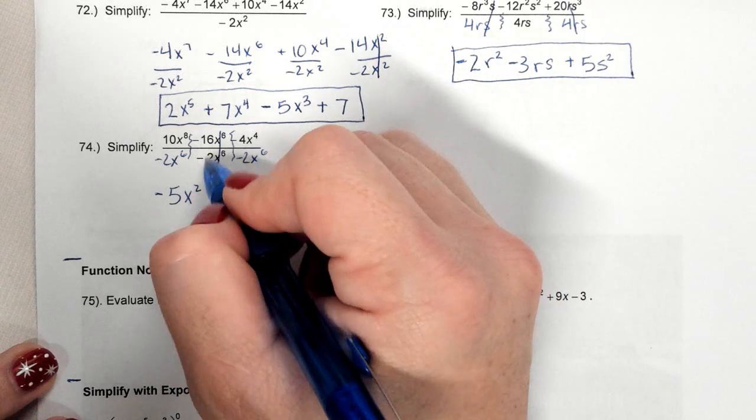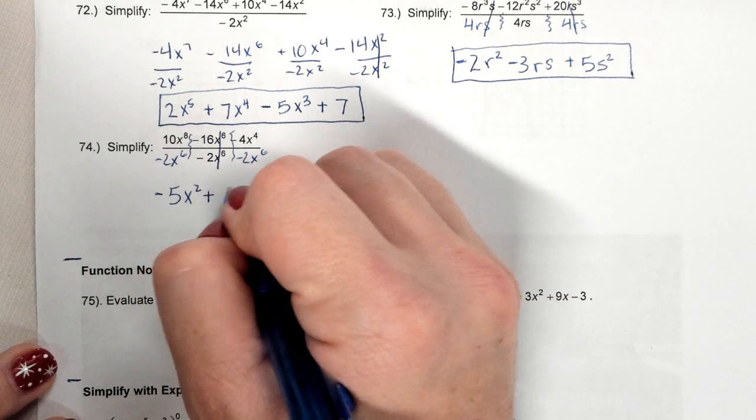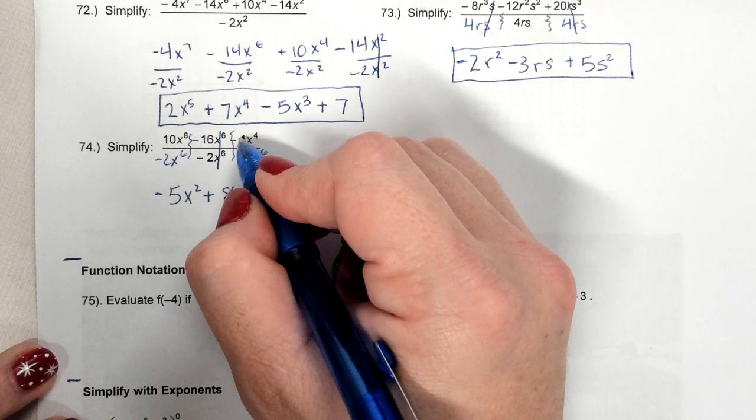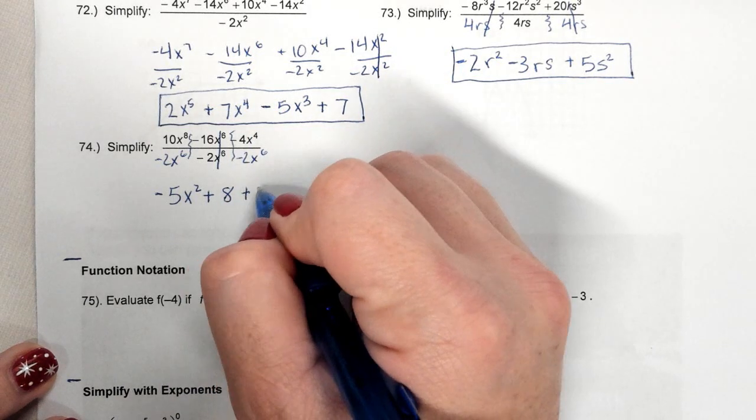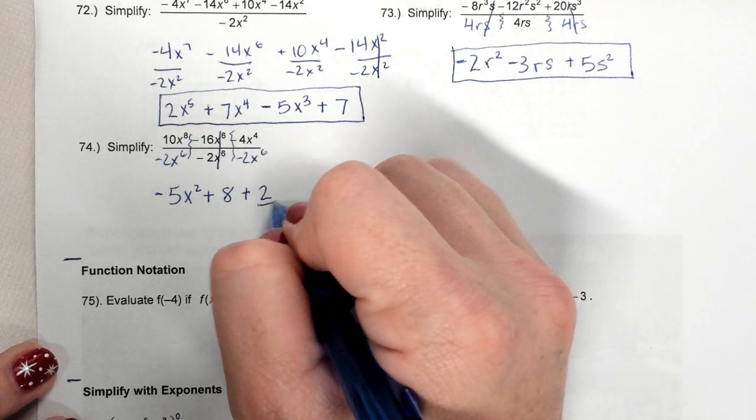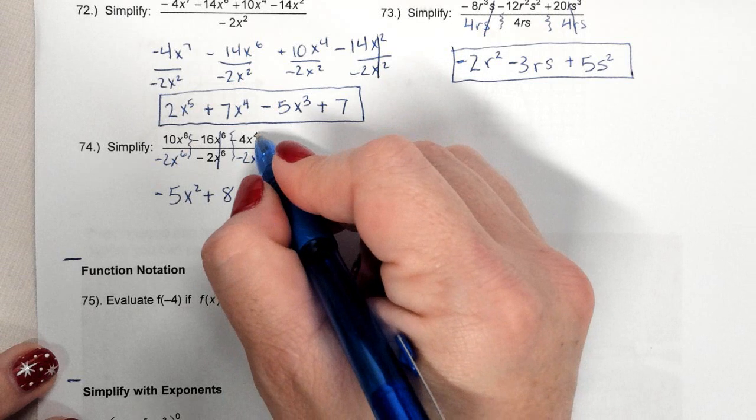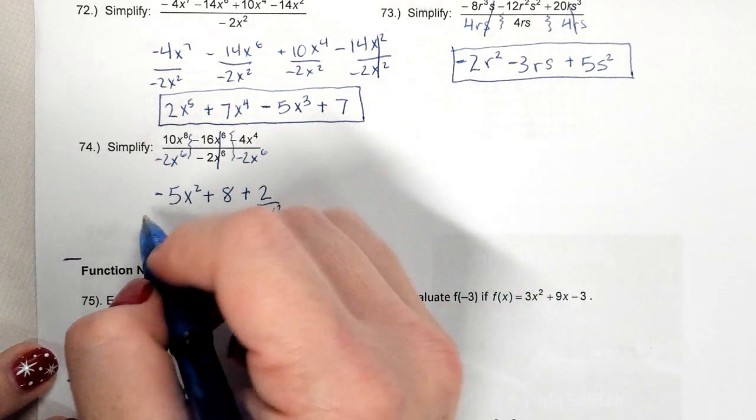-16 divided by -2 is positive 8. Here -4 divided by -2 is positive 2. But there are more x's on bottom, so they're going to stay: 6 minus 4 is 2. There's your answer.